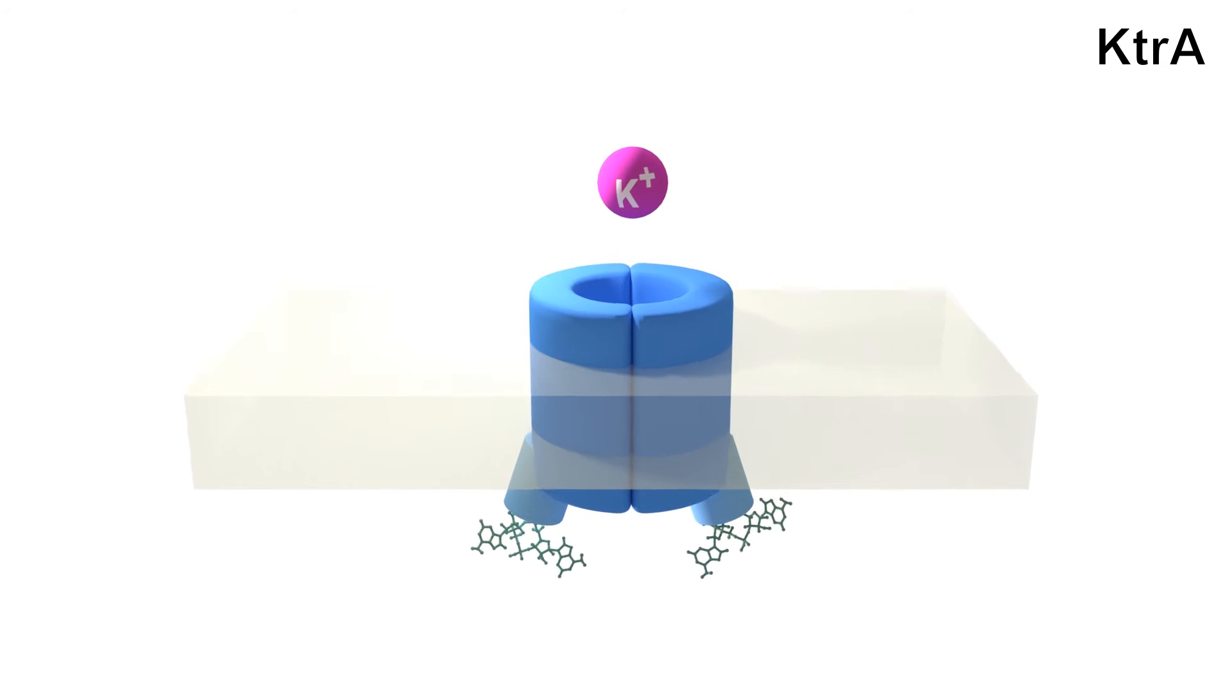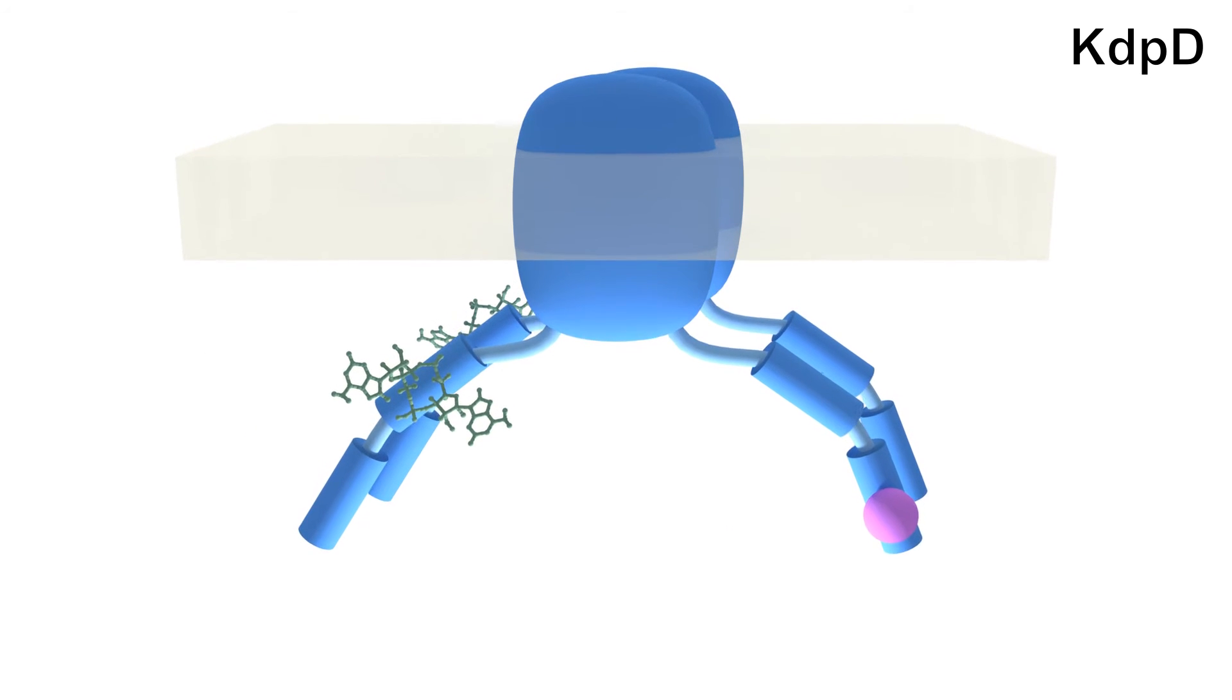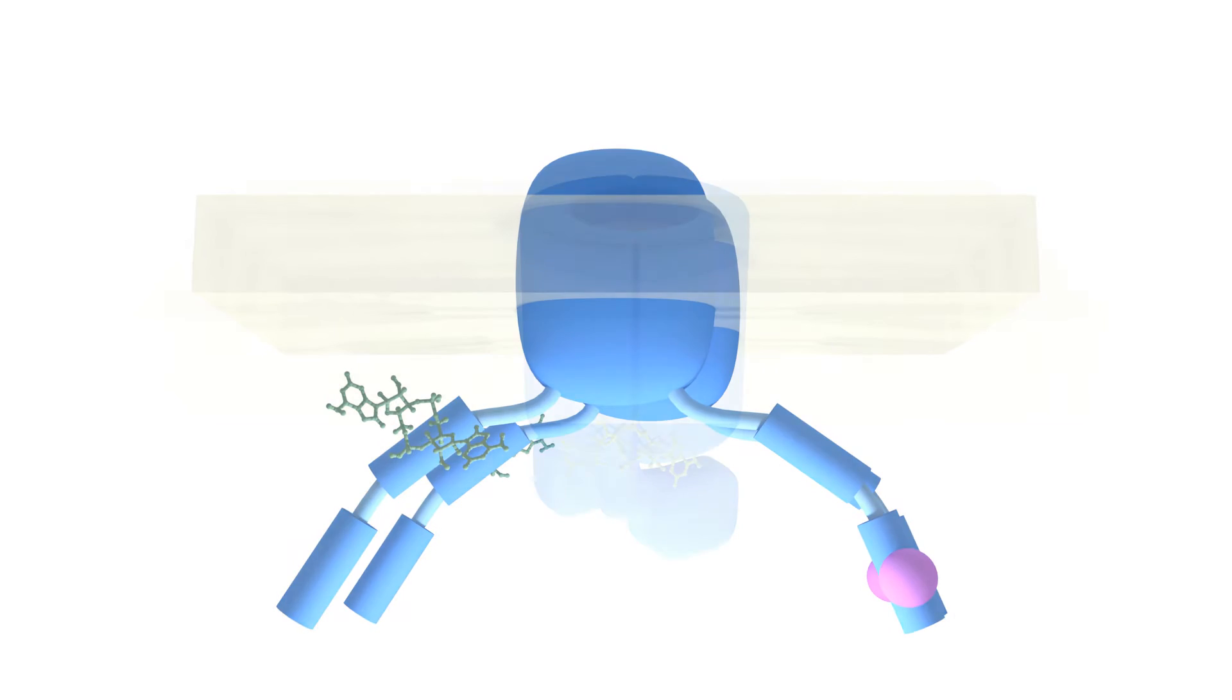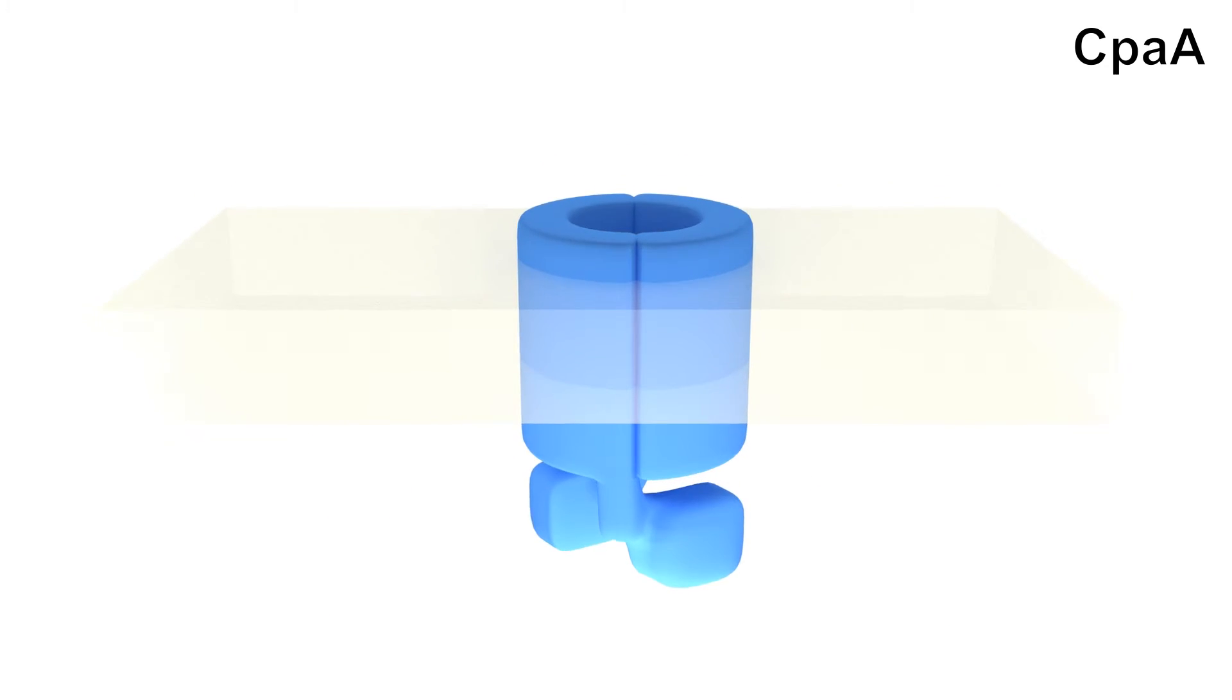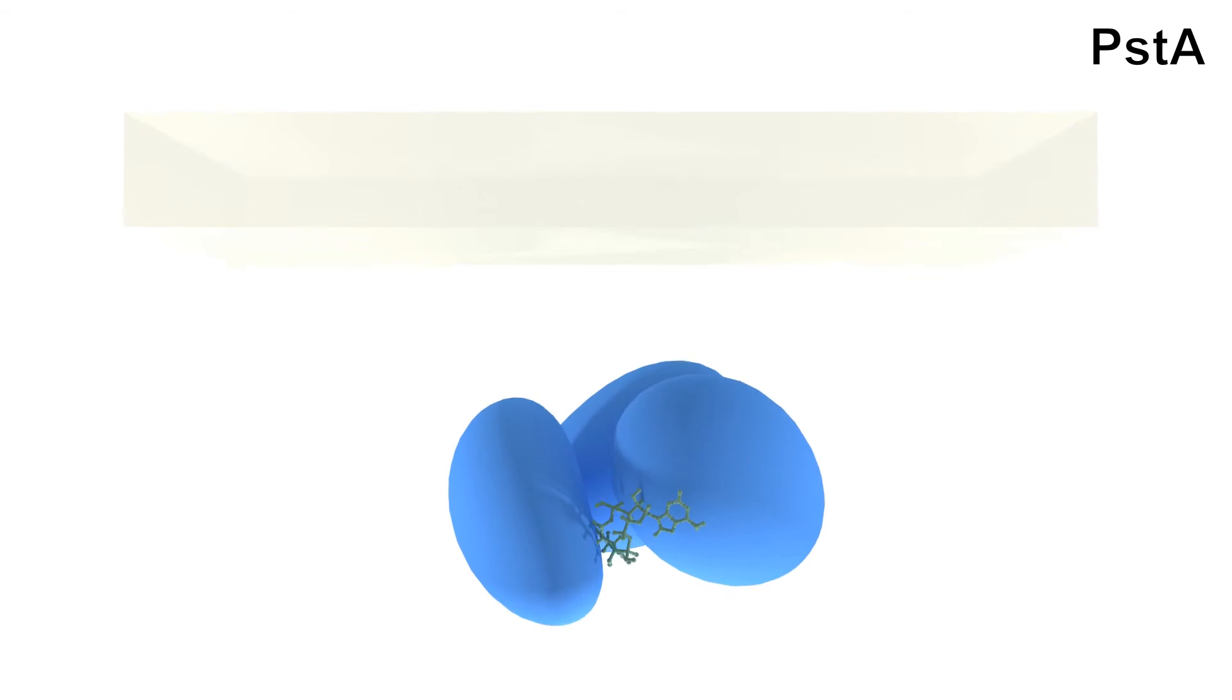These are KTRA, a potassium transporter, KDPD, a sensor histidine kinase potentially involved in potassium uptake, CPAA, another protein supposedly involved in cation transport, but also PSDA, a protein of unknown function.